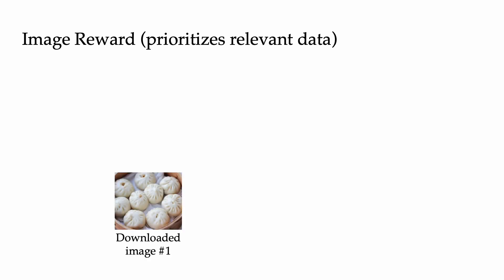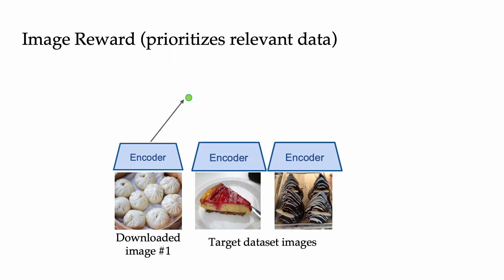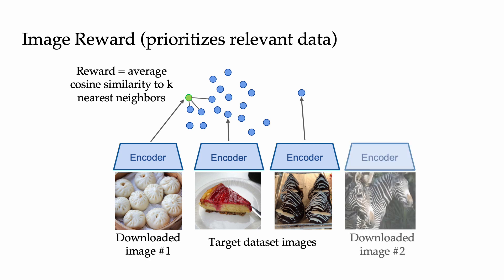Let's talk about the specifics of our image reward, which prioritizes finding relevant data. Given a downloaded image, we use our learned encoder to get the representation of this image, and we can do the same for each image in our target dataset. Our relevance reward is the average cosine similarity between the downloaded image's representation and its k-nearest neighbors' representations from the target dataset. This is effective because an irrelevant image, like this picture of a zebra, will be far away on average from the target dataset representations.